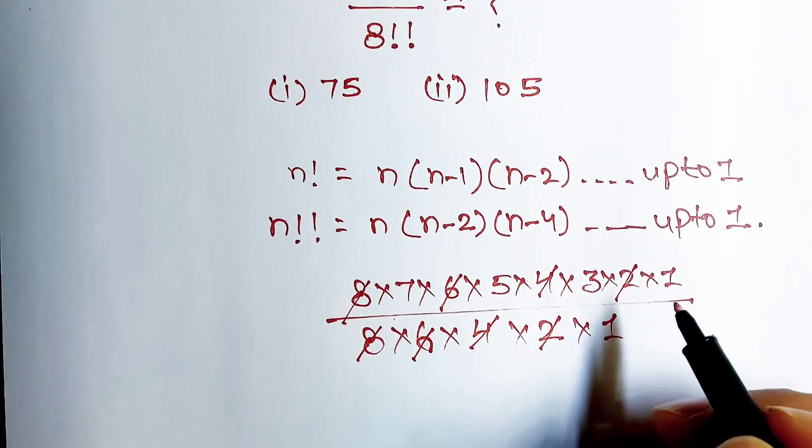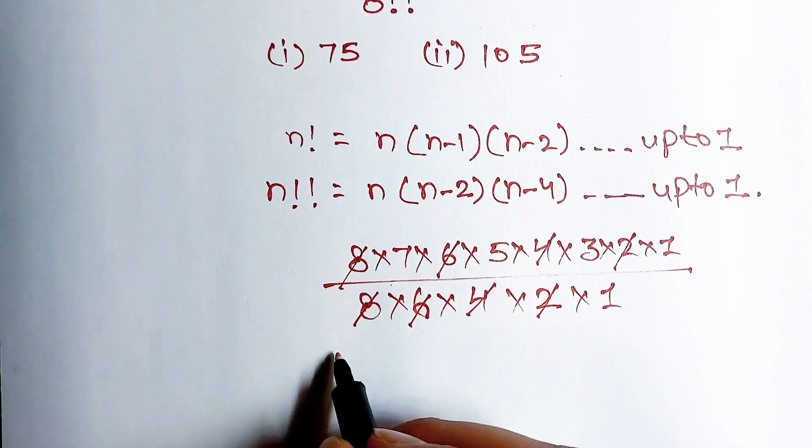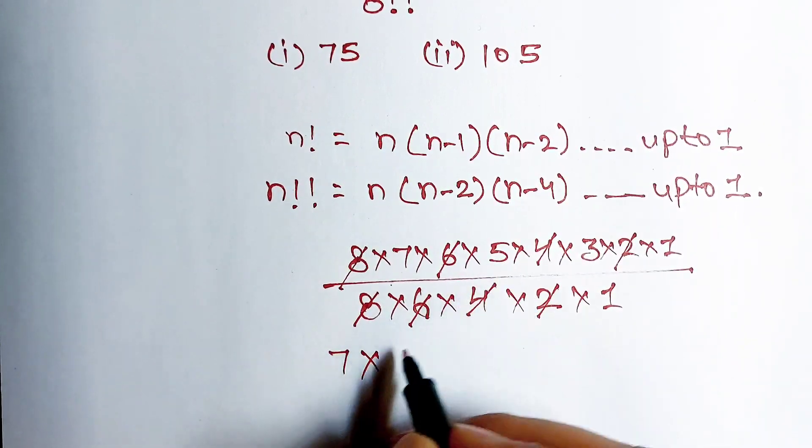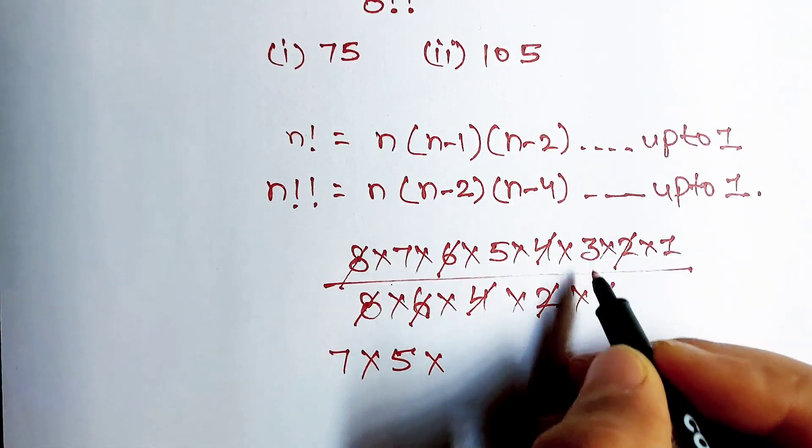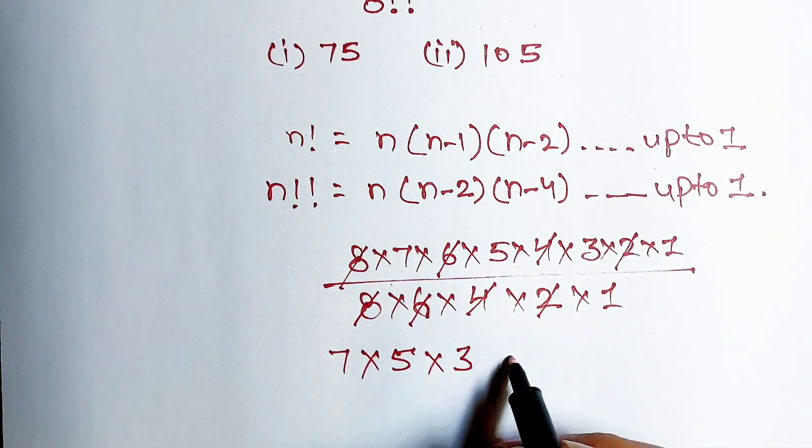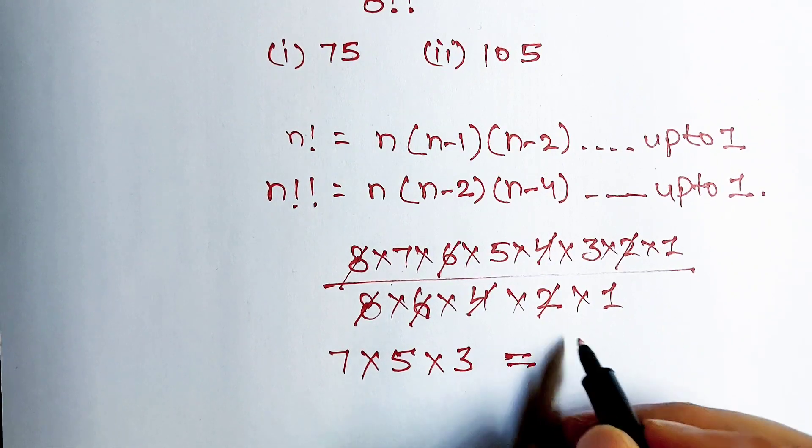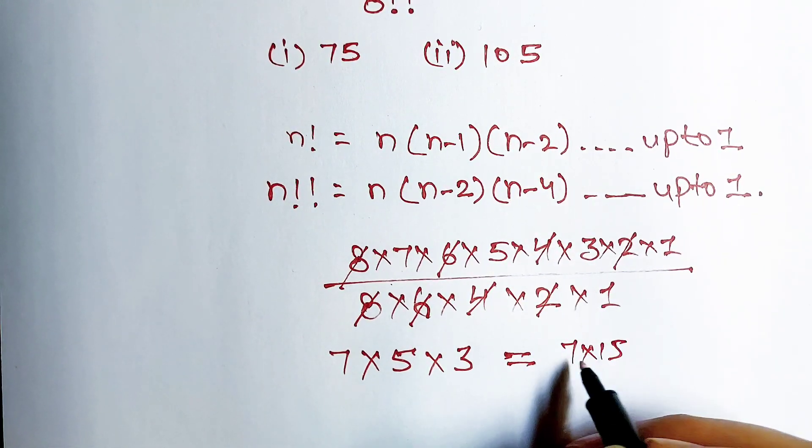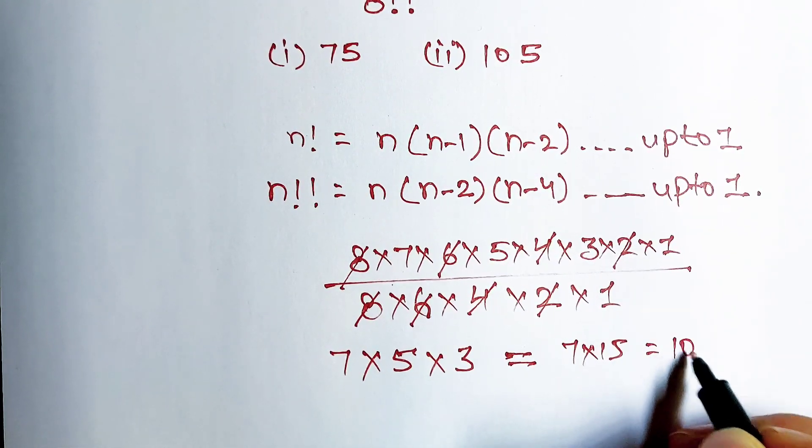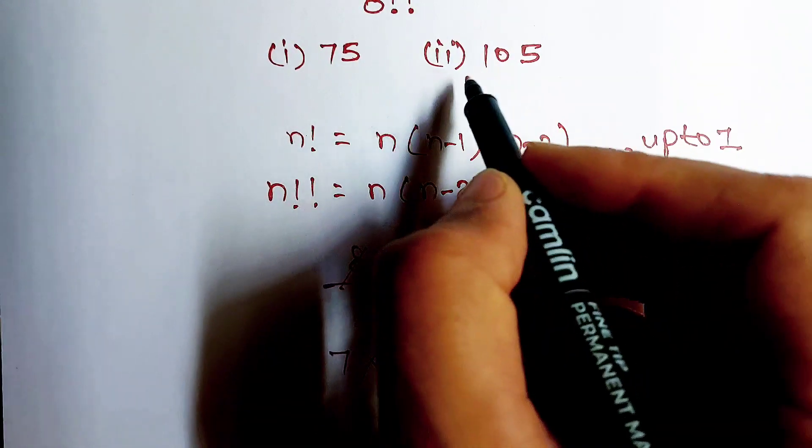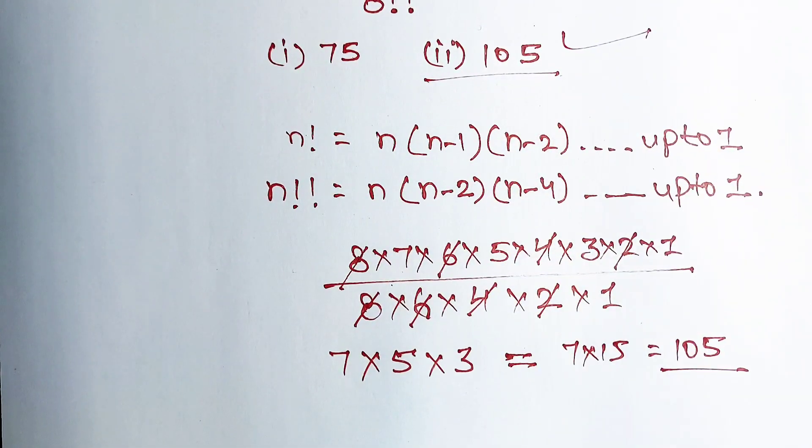What you're left with here is 7 multiply 5 multiply 3. This is equal to 5 multiply 3 equals 15, and 15 multiply 7 is equal to 105, and that's your final answer.